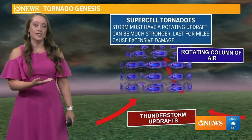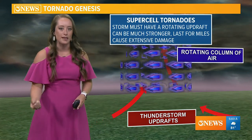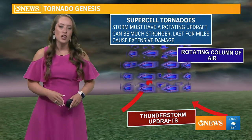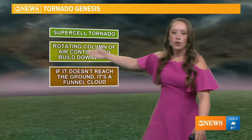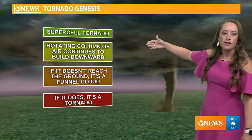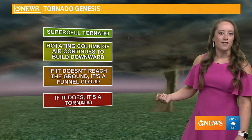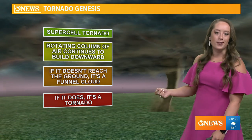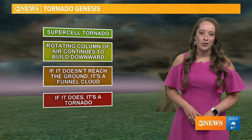Otherwise, here is the difference: a supercell tornado must have a rotating updraft, so it is a much stronger storm in the first place, and that can help those tornadoes last for a long time and create extensive damage. You've got that rotating column of air that starts within the storm, then you see the wall cloud develop, and in a supercell tornado, that rotating column of air starts from the cloud and stretches downward. If it doesn't reach the ground, it's just known as a funnel cloud. But if it does, it is a tornado, and these are the stronger tornadoes. Typically, land spouts are on the weaker end of the EF scale and don't tend to produce much, if any, damage at all.